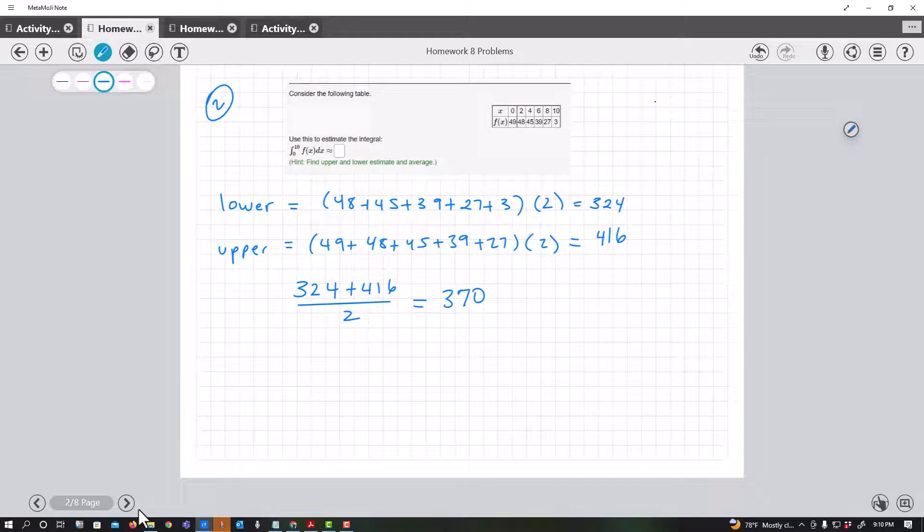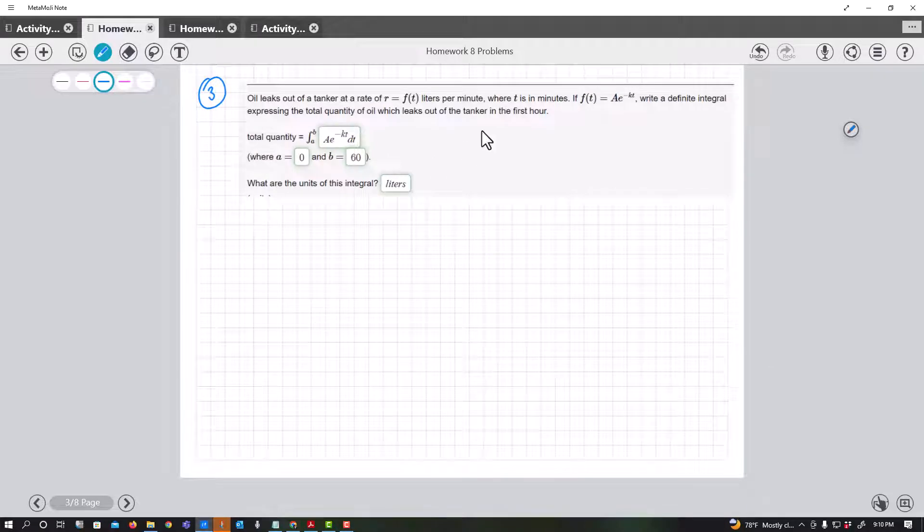All right, we have a table here. We're going to estimate this integral because we don't have a function. What we're going to do is we're just going to find the lower value and the upper value using Riemann sums. So I multiply by 2, why? Because it looks like that change is my 2. And I get my lower, I get my upper, and then I finish this out by finding the average.